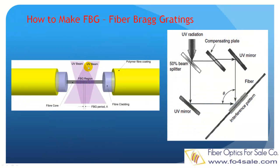Fiber Bragg gratings can be made using a holographic approach with a bulk interferometer. The UV beam is divided into two at a beam splitter, and then brought together at a mutual angle theta by reflections from two UV mirrors. The two UV beams interfere and write a pattern on the photosensitive fiber.